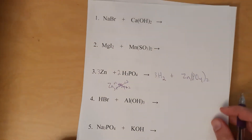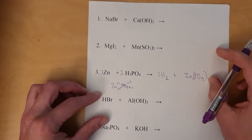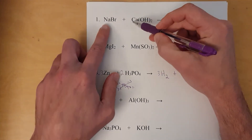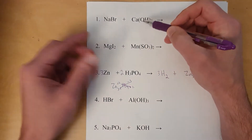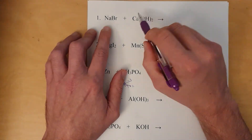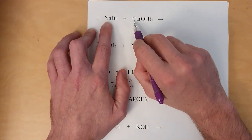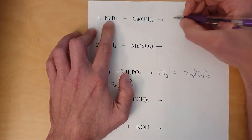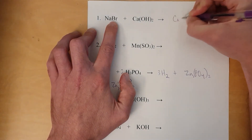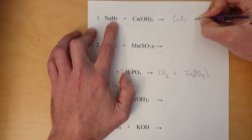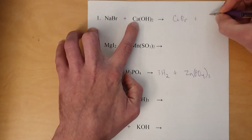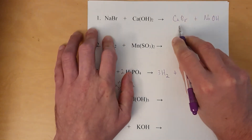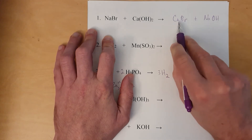Let's do double displacement reactions, starting back at number one. With these, you likewise switch the parts, fix the formula, and then balance. There are no pure elements, so switching the parts means putting calcium here and sodium here. Instead of sodium bromide, now it's calcium plus bromine. The other product is sodium plus hydroxide. We've got to check on the formulas since we've switched the parts.